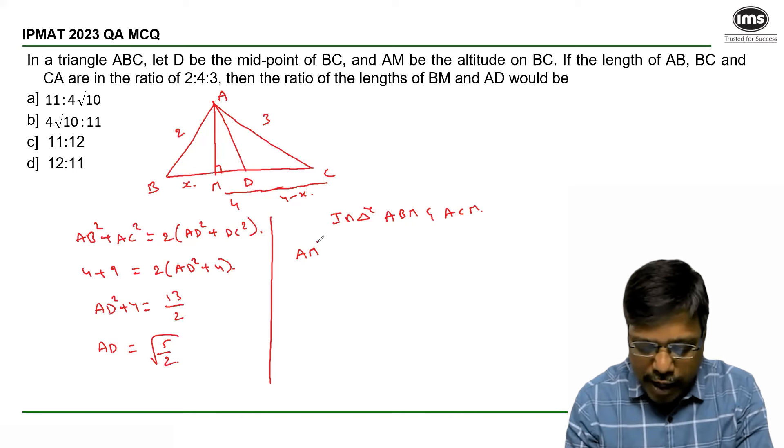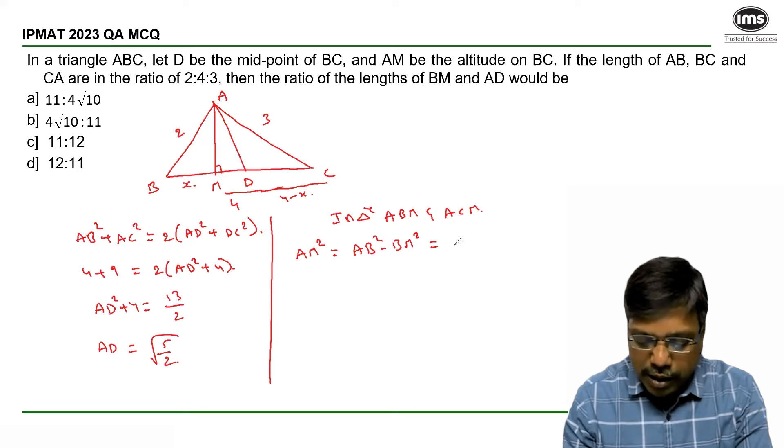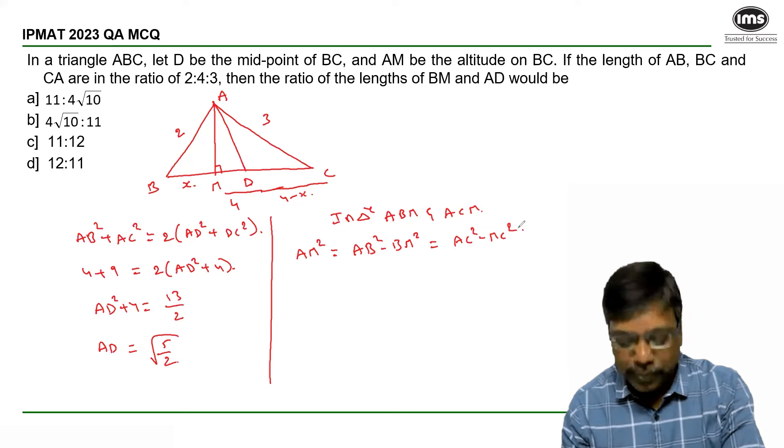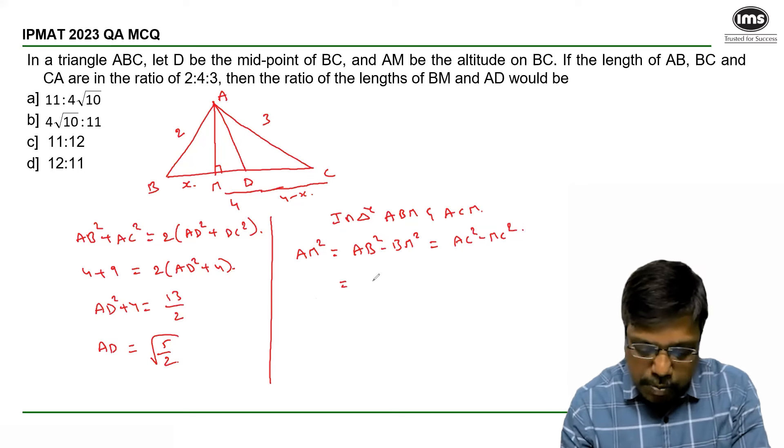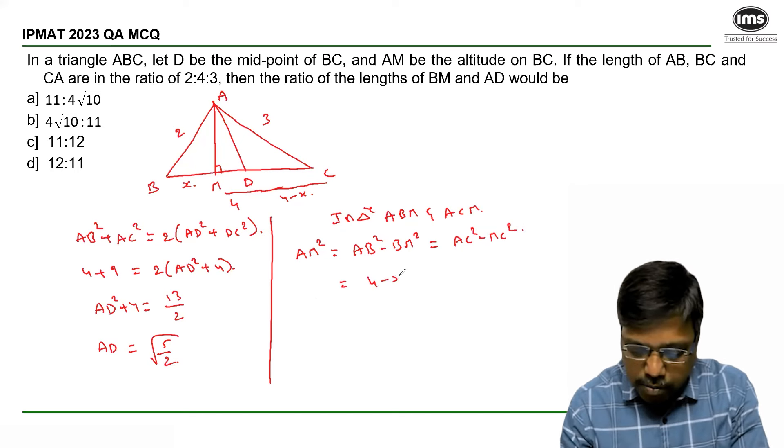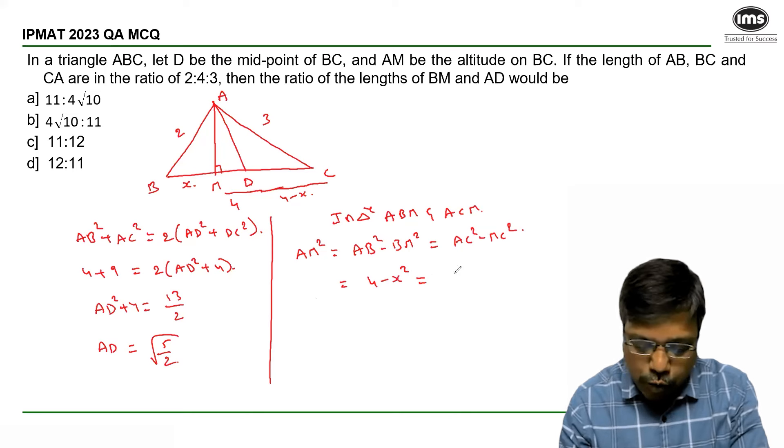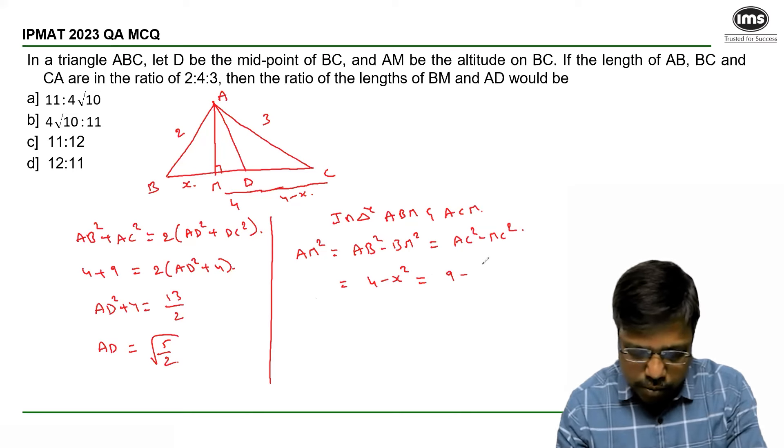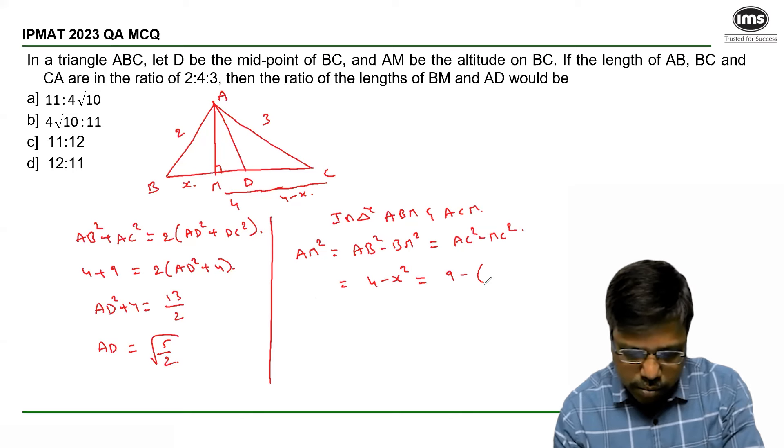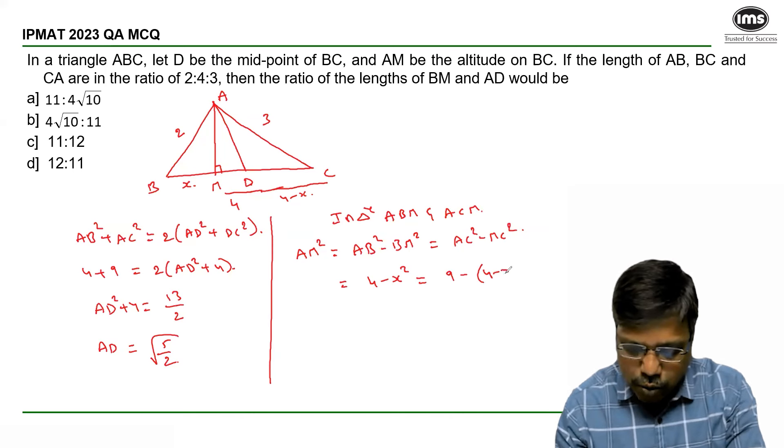AM² can be written as AB² - BM², which is the same as AC² - MC². So AB² - BM² = AC² - MC².